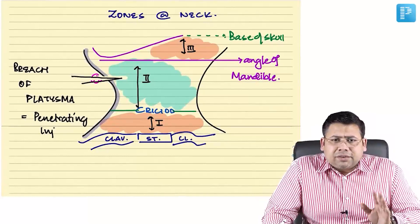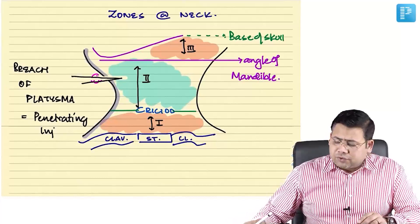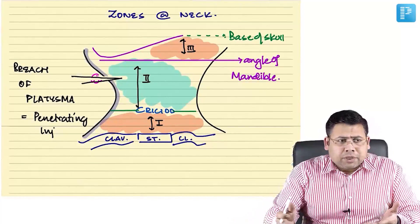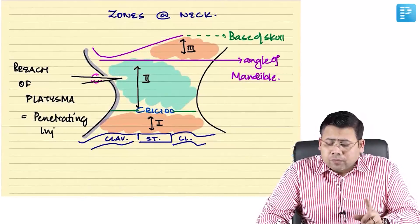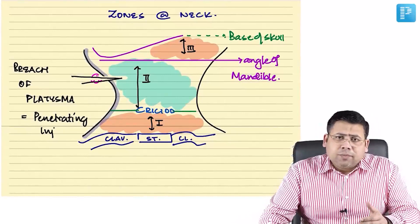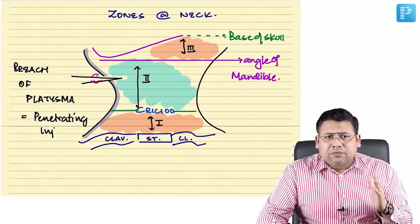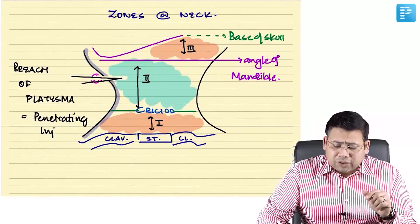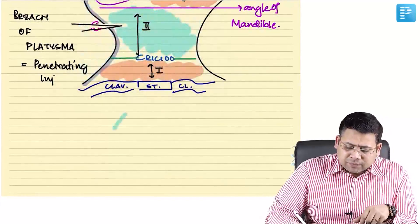Whenever there is injury in the neck, three things come to mind: injury involving the trachea, injury involving the esophagus, and injury involving the vascular structures. Injury to the trachea or esophagus allows the patient to survive for maybe six to twelve hours, but injury to the vascular structures compromises life immediately.